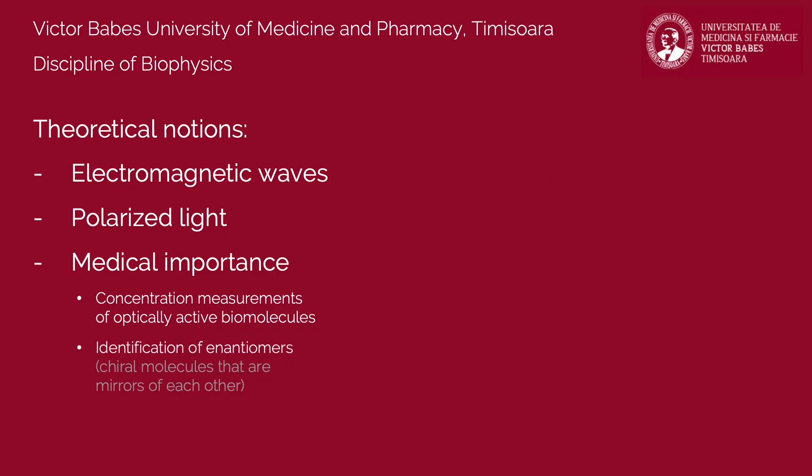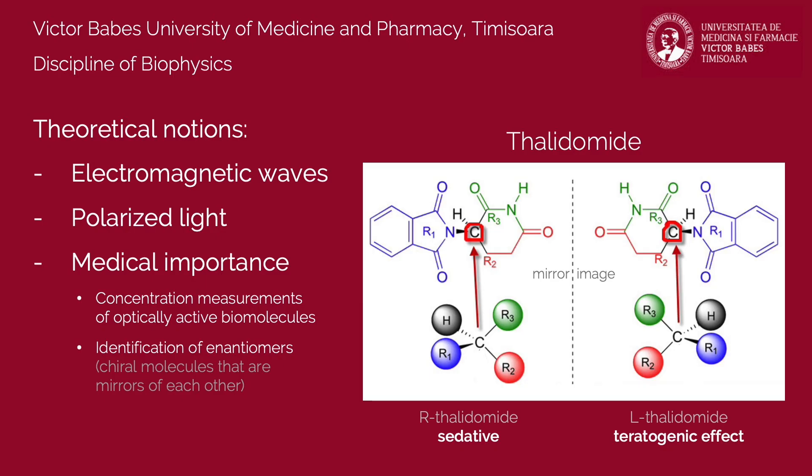Enantiomers are chiral molecules that are mirror images of each other. Enantiomers cannot be identified using regular biochemical methods. Although these molecules have the same chemical formula, their biological action can be very different. For example, one isomer of thalidomide is sedative, while the other is toxic, causing abnormalities in the physiological development of an embryo or fetus.